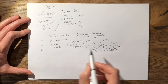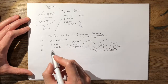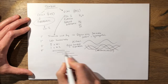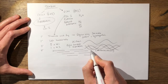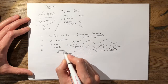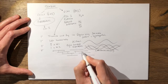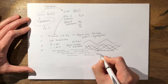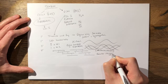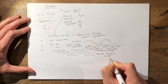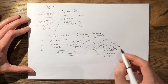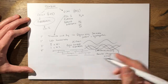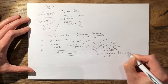Moving on to the quaternary structure: tropocollagen is arranged into what is called a quarter-staggered array, meaning that tropocollagen units of four are staggered and the sequence repeats. In between the tropocollagen units they are bound by hydrogen bonds, which adds to its compressive strength. This quarter-staggered array forms your microfibril.